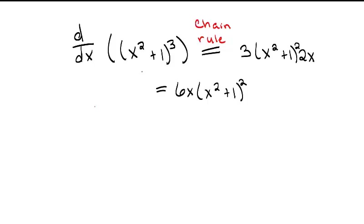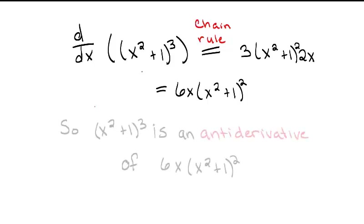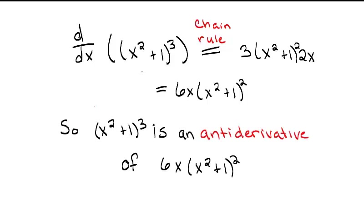Using the new language we have learned, this means that (x² + 1)³ is an antiderivative of 6x times (x² + 1)².